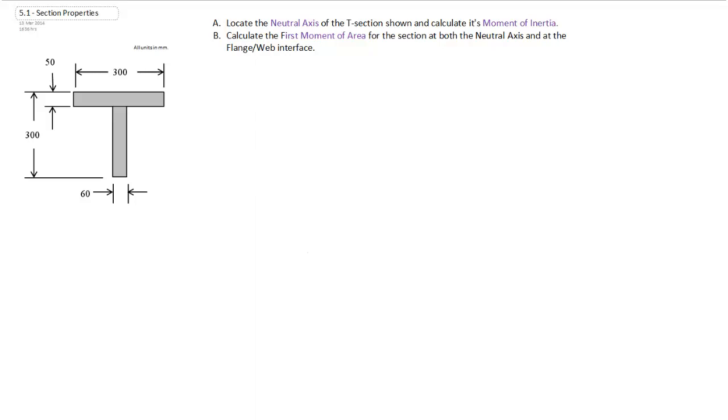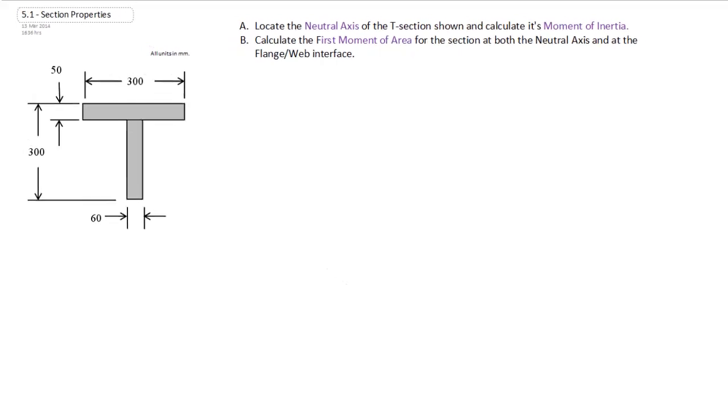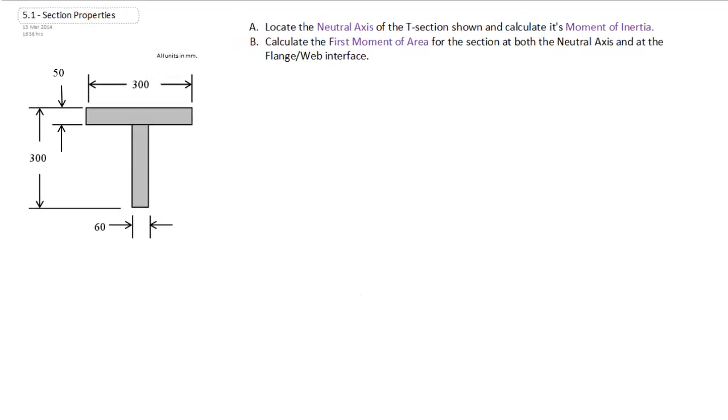So the first thing I need to do is I need to set up a reference plane. Now it doesn't matter where you set up that reference plane. Common places would be the bottom of the cross-section, top of the cross-section. For me, I normally, if I have no other reason to do it otherwise, will pick the bottom of the cross-section.